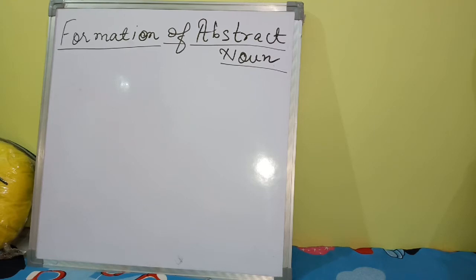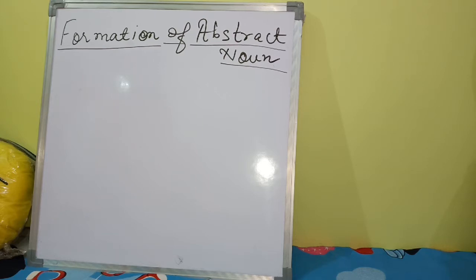An abstract noun refers to abstract things like action, quality, feeling, state, or art. These things can be thought of or felt only — we cannot touch them. A name given to a condition, quality, feeling, or thought that we can only think or feel but cannot touch is called an abstract noun.